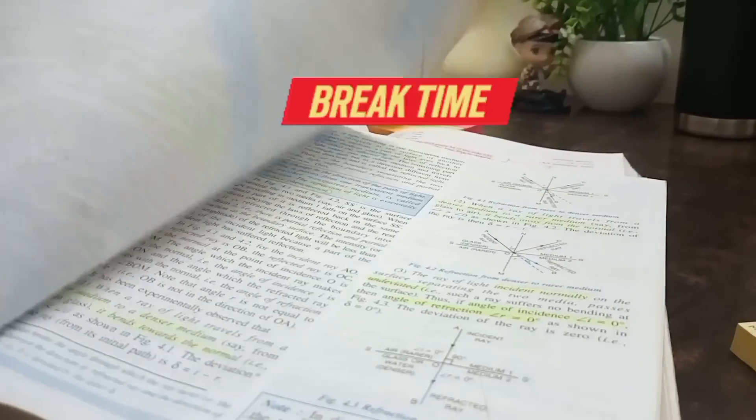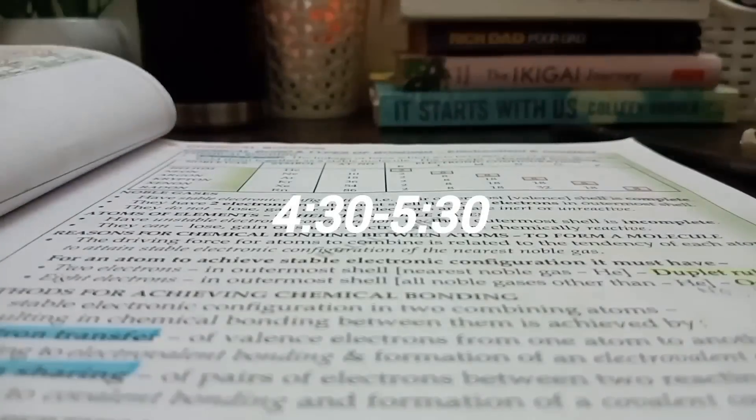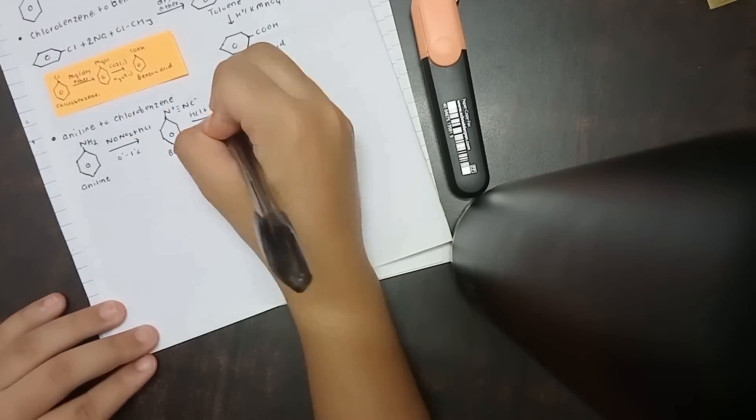After half an hour break, you have to start up with physics or chemistry from 4:30 till 5:30. Try to give more time to the numericals in physics and the reactions in chemistry.